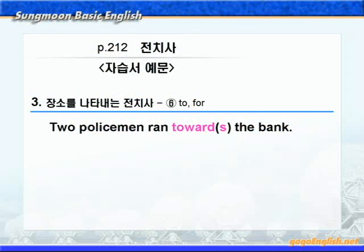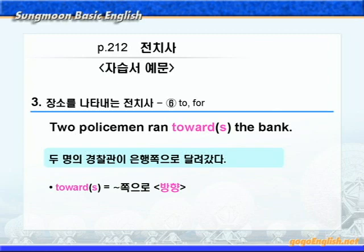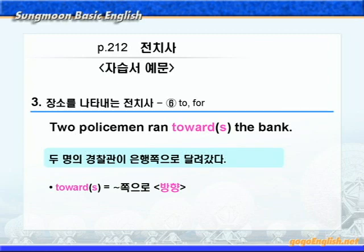다음으로 넘어가기 전에 전치사 toward 혹은 towards에 대해서 살펴보죠. 'The policeman ran towards the bank.' toward 혹은 towards는 '뭐뭐로'라는 뜻으로 방향을 나타내니까, '두 명의 경찰관이 은행 쪽으로 달려갔다'가 됩니다. 지금까지 장소를 나타내는 전치사에 대해서 배웠는데요. 단순히 그 뜻만 외우지 말고, 실제 그 전치사가 쓰인 예문을 중심으로 외워두시기 바랍니다.